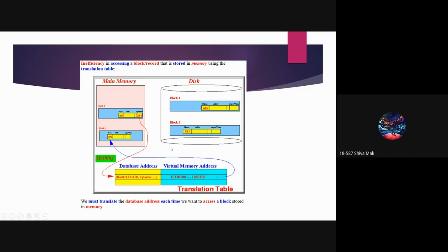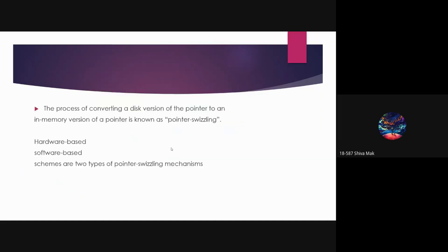To eliminate this, we use pointers. We must translate the database address each time when we want to access a block stored in the memory. The process of converting the disk version of the pointer to an in-memory version of the pointer is known as pointer swizzling.